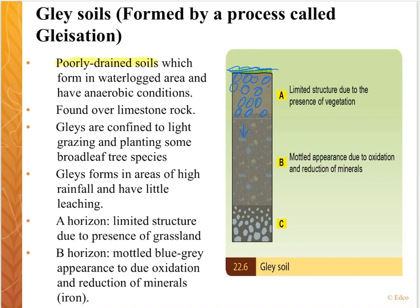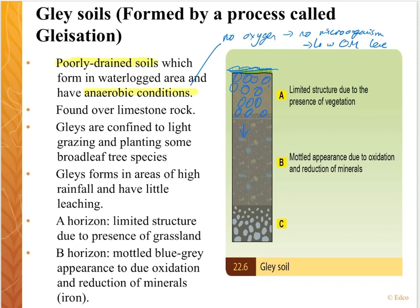Due to being poorly drained soils, that means we're going to get waterlogged conditions and anaerobic conditions. Anaerobic is just a word that means no oxygen present. So if the soil is full of water, there's going to be no oxygen present. That means there's going to be no microorganisms and low levels of organic matter.